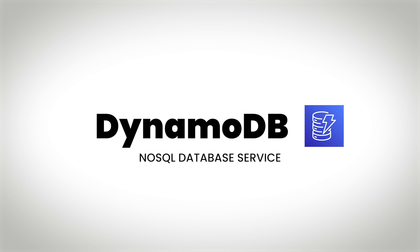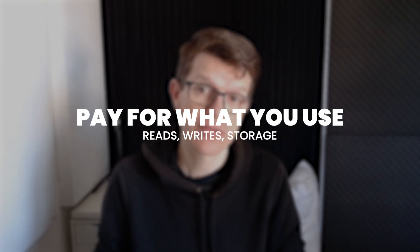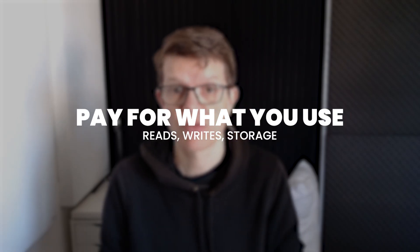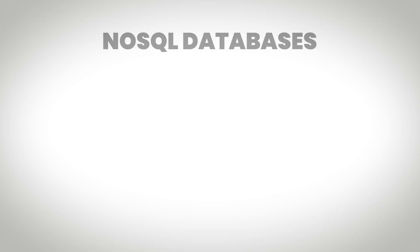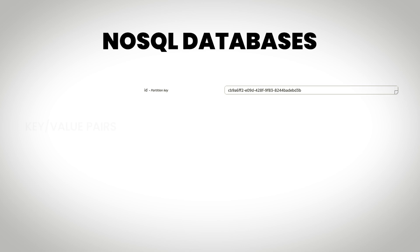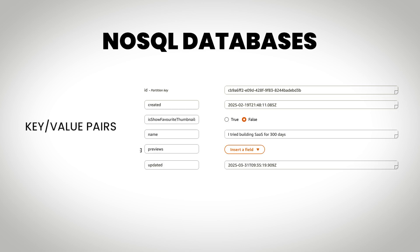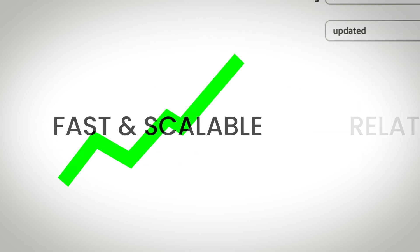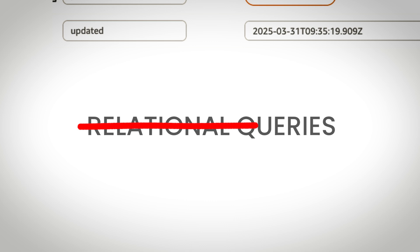DynamoDB is a NoSQL database without any servers to manage. AWS handles the infrastructure and you just pay for what you use — reads, writes, and storage. NoSQL databases like DynamoDB are great for storing key-value pairs. They're fast and scalable, but they don't support relational queries like traditional databases. Still, for many web apps, DynamoDB is ideal, especially if you want to keep costs down.